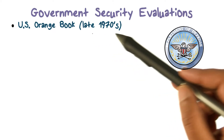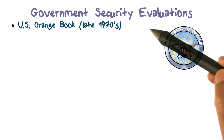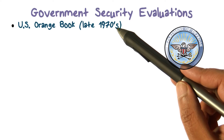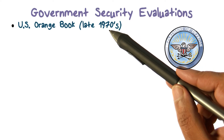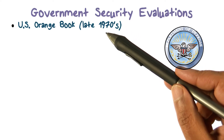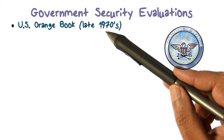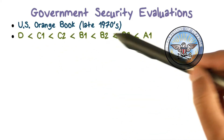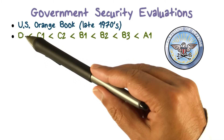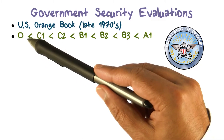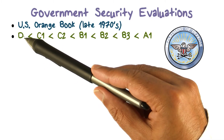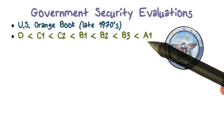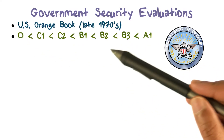The Orange Book captured the evaluation criteria and came up with a way to place a system in a division, and within a division, a certain class. The four divisions were D, C, B, and A. D was the least trustworthy, and A was the highest level of trust.